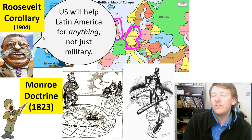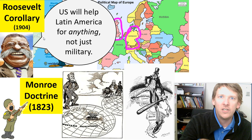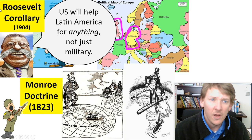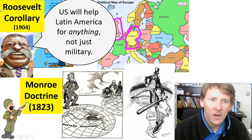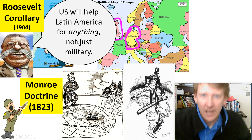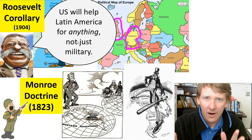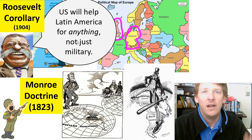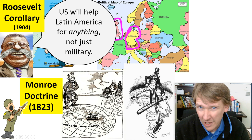Roosevelt creates the Roosevelt Corollary — an addendum to the Monroe Doctrine. He says it's not just military intervention anymore. The U.S. will help in Latin America or South America for anything, not just military matters. Europe, stay out. The Monroe Doctrine was mainly for militaristic events, but now it covers everything. If you're coming to collect your money — sorry, those are the rules. You're in Europe; over here in the Western Hemisphere, it's up to the Americans.